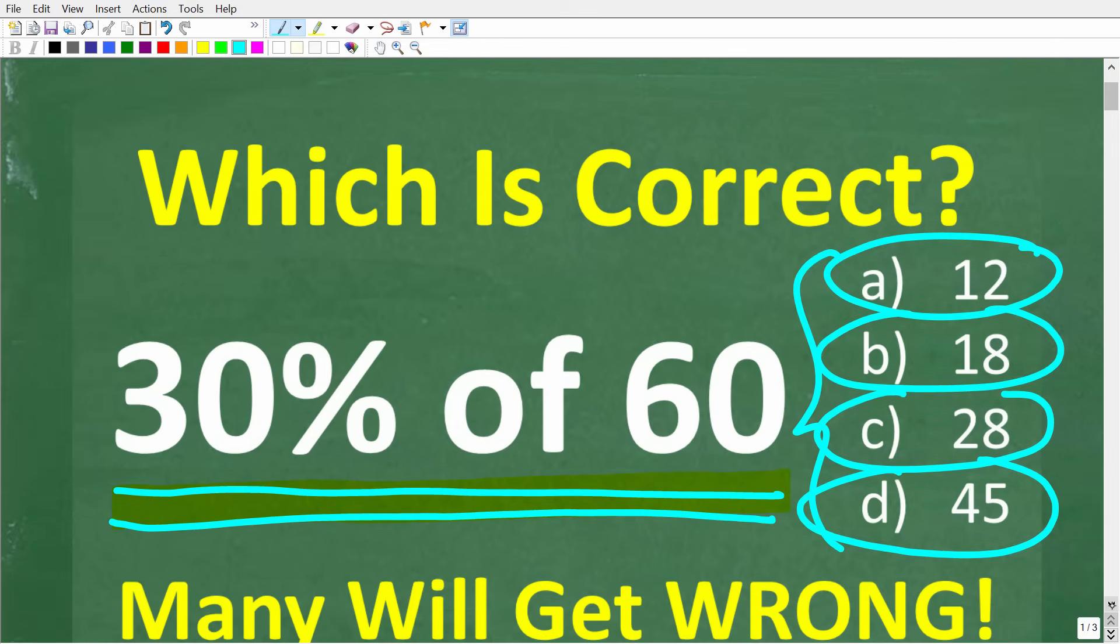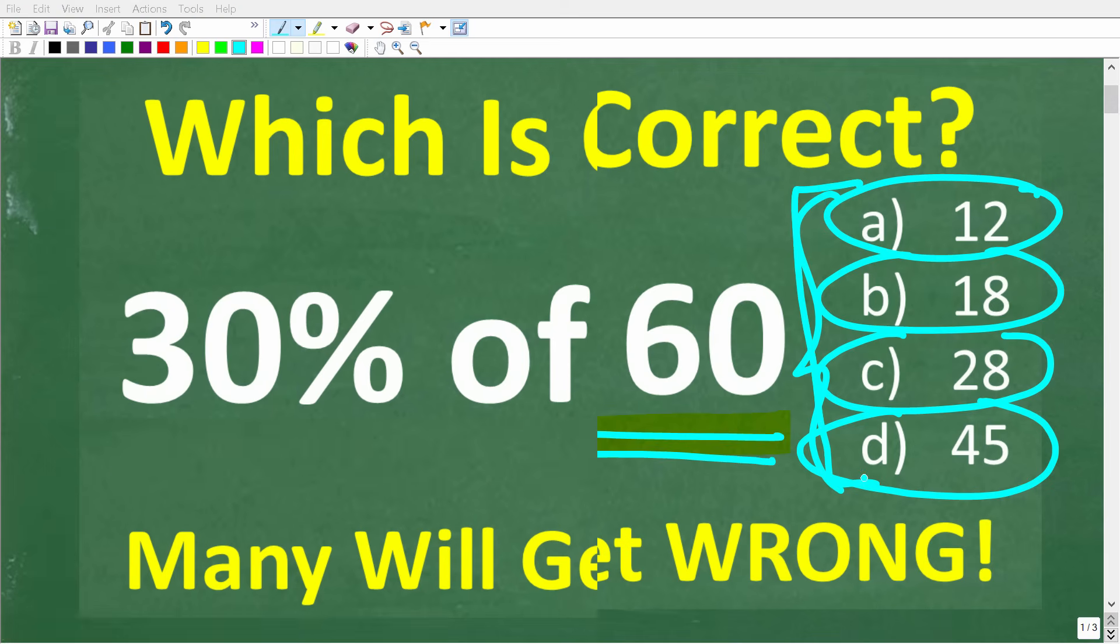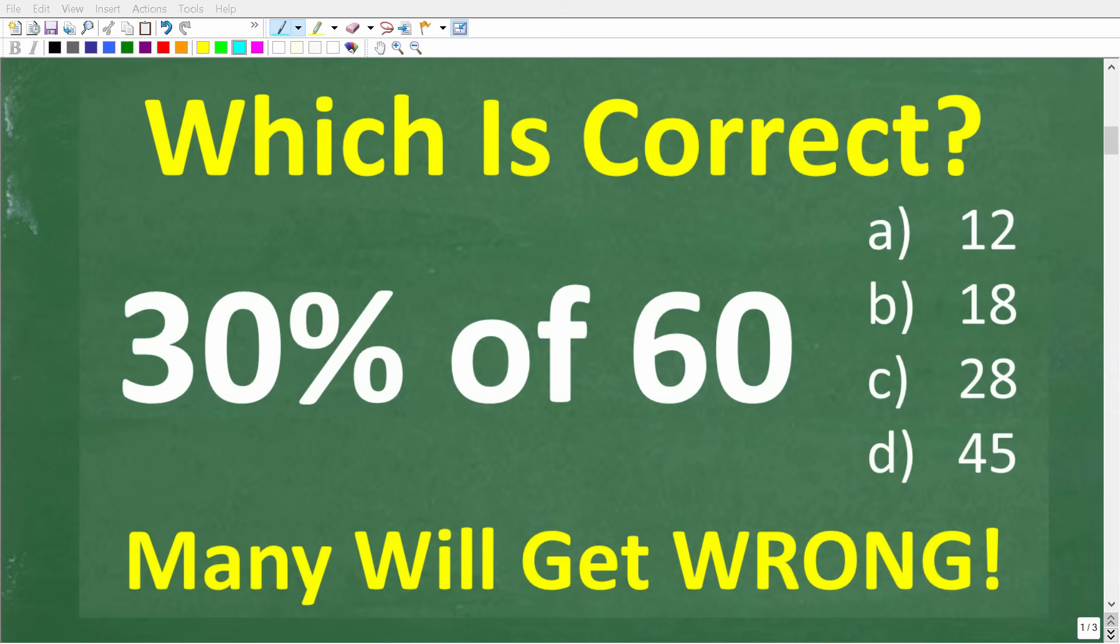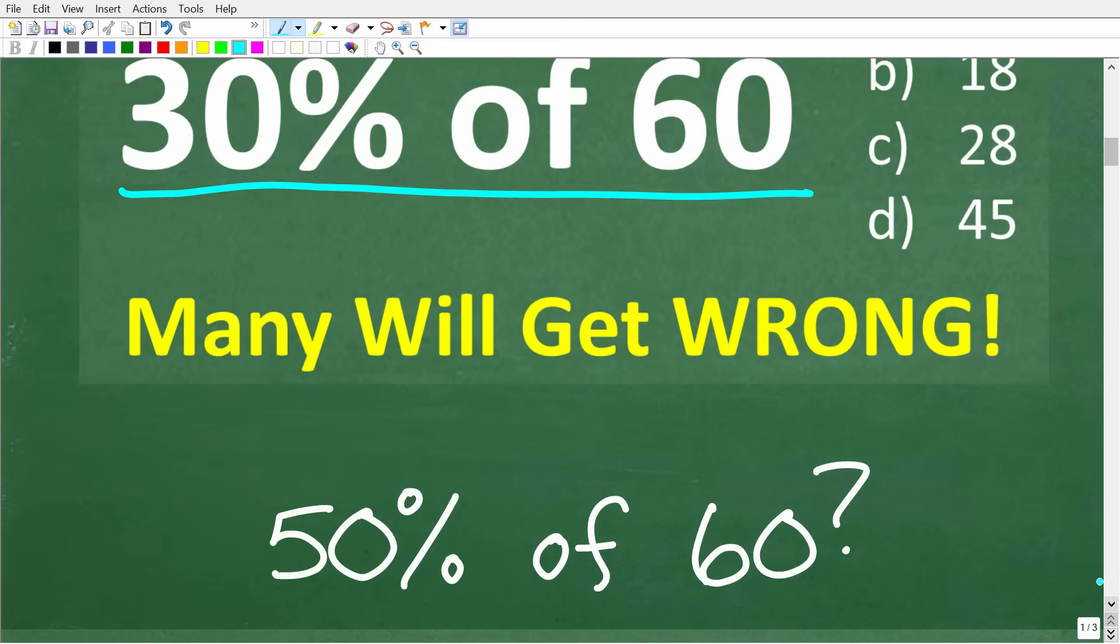All right, so one more time, we're trying to figure out 30% of 60 without using a calculator. And the correct answer is one of these right here. So before I show you how to find the solution, let's just take a look at how we can eliminate some of these options to this multiple choice question.